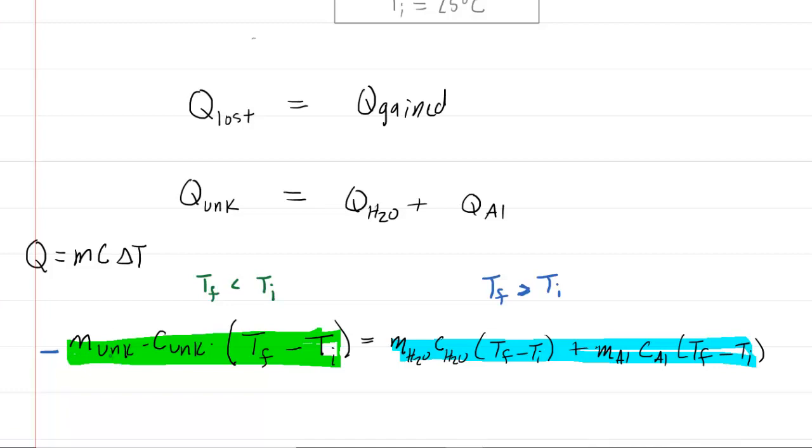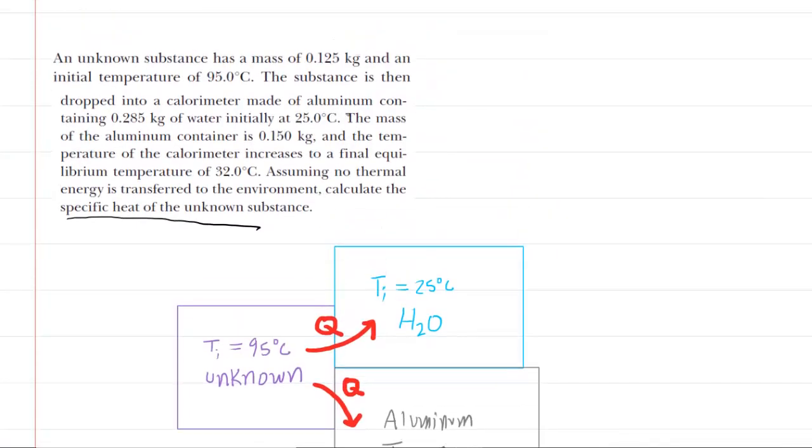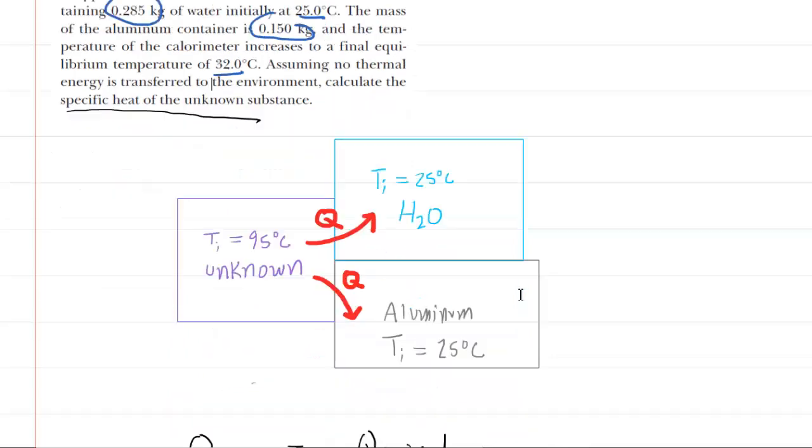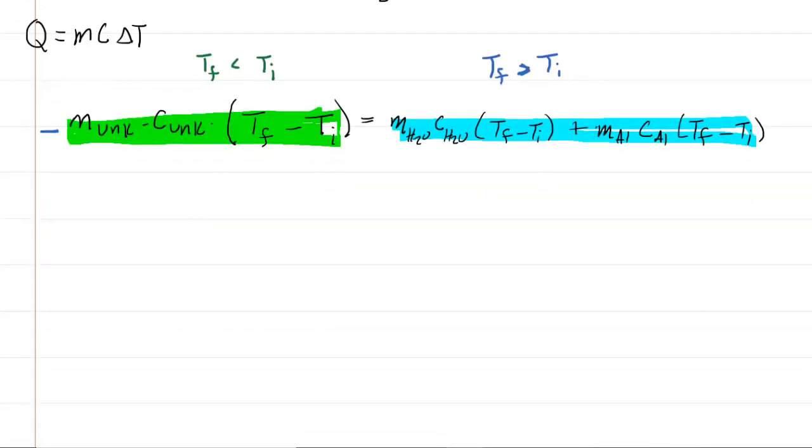We're going to go ahead and plug in all of the known values here. We have all of the masses - the unknown mass is given, the mass of the water, and the mass of the aluminum itself. We have all of their initial temperatures. And then the final temperature is also given. Notice the final temperature will be the same for all three objects because they are in an equilibrium state. So we'll plug in all the known values. And remember, we're going to have to look up these specific heats for water and aluminum.